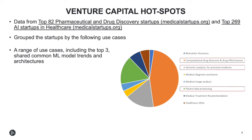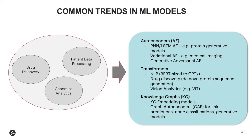If you dig into research papers and blogs across most of these use cases, not just the top three mentioned, you find recurring themes in ML model architectures and trends. Across the top three use cases identified, we've seen a common interest in a short list of ML models and architectures. Auto-encoders play a major role across a wide range of use cases. RNN and LSTM approaches have been more commonly used up to now, but have their limitations.